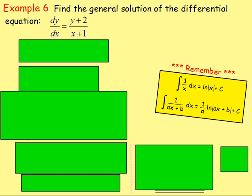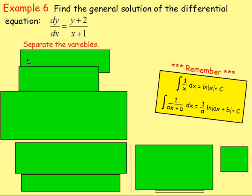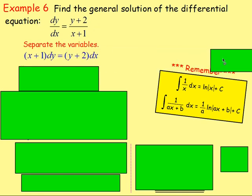Example 6: find the general solution of the differential equation dy/dx equals (y plus 2) over (x plus 1). Again, the first thing you need to do is separate the variables. So cross multiply — multiply both sides by dx, multiply both sides by x plus 1. That will give us (x plus 1) dy equals (y plus 2) dx.